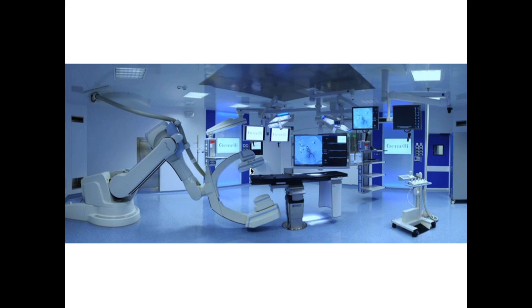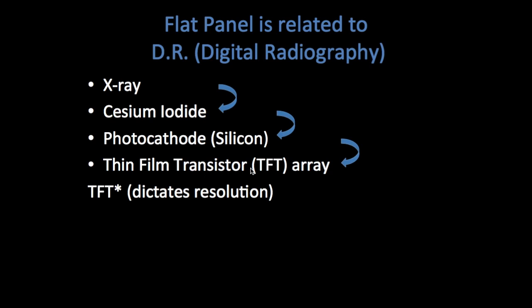The flat panel fluoroscopy system is related to digital radiography. The signal chain begins with the x-ray, then passes through cesium iodide — the same material used for the input phosphor in image intensifier systems. It is at this stage that x-ray photons are converted to light photons, and that conversion happens thanks to cesium iodide, which we still use in flat panel fluoroscopy.